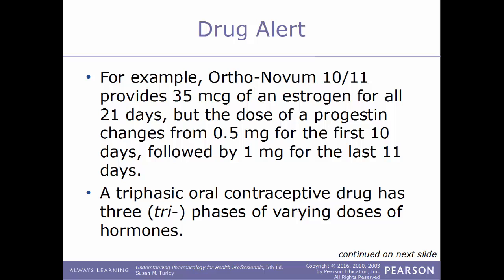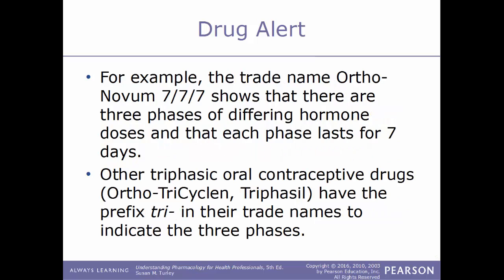A triphasic oral contraceptive drug has three phases of varying doses of hormones. For example, Ortho-Novum 7/7/7 shows three phases of differing hormone doses, each phase lasting seven days. Other triphasic contraceptive drugs such as Ortho Tri-Cyclen and Triphasil have the prefix 'tri' in the trade name to indicate the three phases.